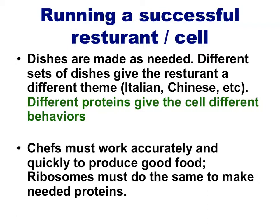For a cell to remain alive and healthy, it must operate like a successful restaurant. Not all recipes need to be made at the same time, and only certain proteins are produced when needed. This selective production in the amount and timing of each protein is known as gene expression. Each protein has different characteristics because of its individual sequence of amino acids, and these different characteristics can influence cell behavior. In the same way that a restaurant needs chefs which are quick and produce consistent dishes correctly, so too must a cell produce proteins in a quick and accurate way. If the proteins are not made correctly or not made fast enough, the cell will not be able to function properly — and the severity of this problem will depend upon the specific role each protein is playing.